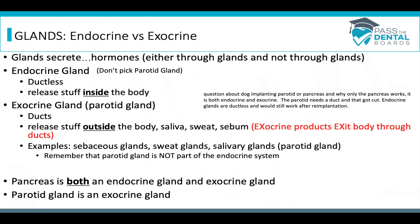Both the endocrine and exocrine systems have glands that secrete hormones. We categorize whether a gland is endocrine or exocrine based on whether it has a duct or no duct. Endocrine glands are ductless and release substances inside the body — like the thyroid, pineal, and pituitary glands. Exocrine glands, such as the parotid gland, have ducts and release substances outside the body, such as saliva, sweat, and sebum. Remember: exocrine products exit the body through ducts. The pancreas is both an endocrine and an exocrine gland, delivering chemicals both through ducts and without ducts.